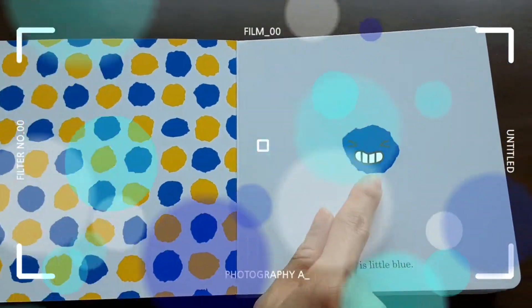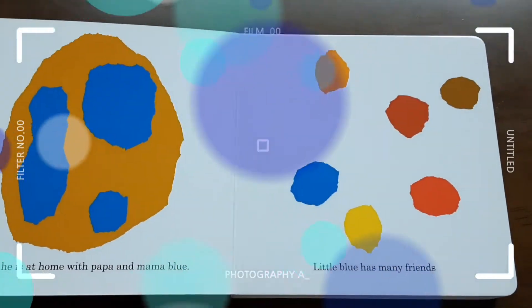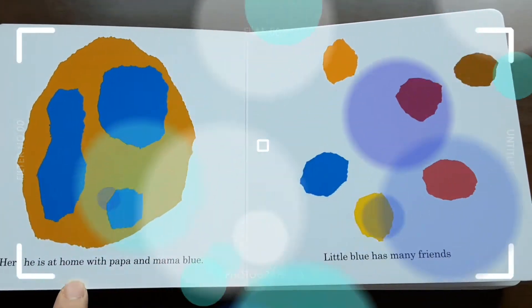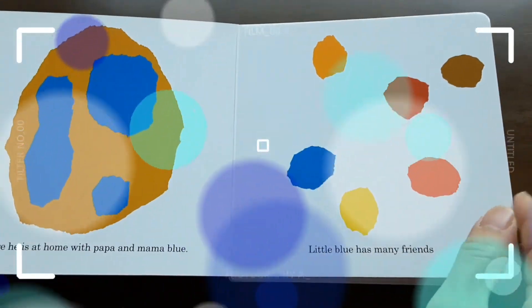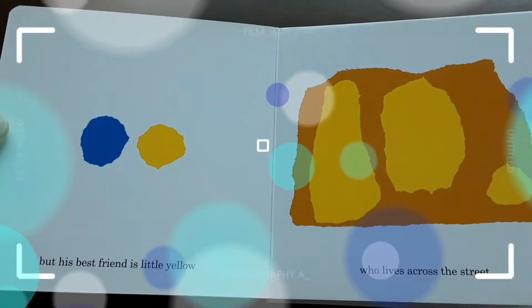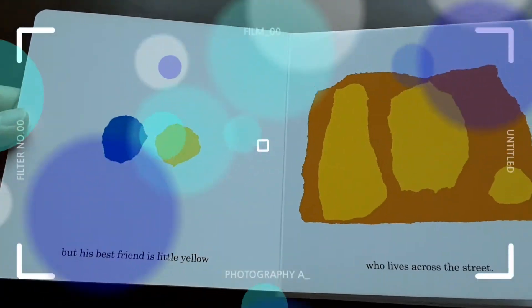This is Little Blue. Here he is at home with Papa and Mama Blue. Little Blue has many friends, but his best friend is Little Yellow. He lives across the street.